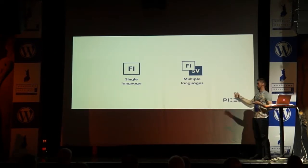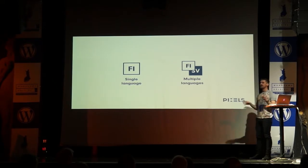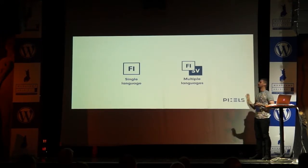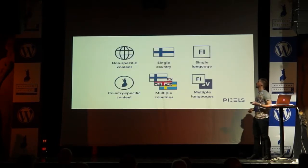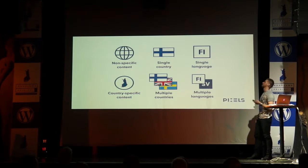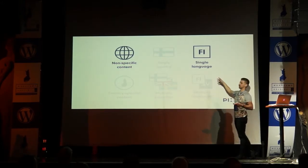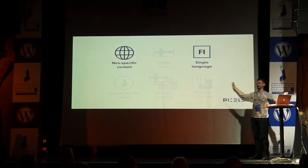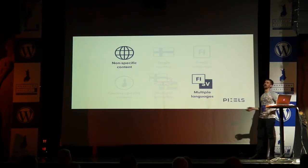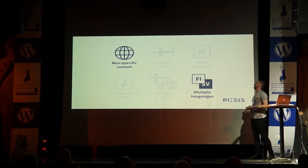Are you dealing with single languages or multiple languages? I'm going to go through the matrix of how to make sense of this. So the first one is what most websites out of the box are: non-specific content for a single language, which is basically just example.com — that's it. Then you've got non-specific content for multiple languages: example.com/en, /fi, /fr — Finland, English, or French, wherever that may be. The language doesn't necessarily have anything to do with the country.